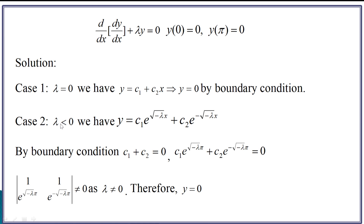Let us move on to the second case where lambda is negative. If lambda is negative and you solve this equation, you will get this solution. This is easily solvable — these are all linear differential equations with constant coefficients. We can easily solve them using our knowledge from graduation. We are not going into details of the solution procedure; we are interested in the theory and the properties these solutions have. The solution for lambda < 0 is y = c₁·e^(√(−λ)x) + c₂·e^(−√(−λ)x).